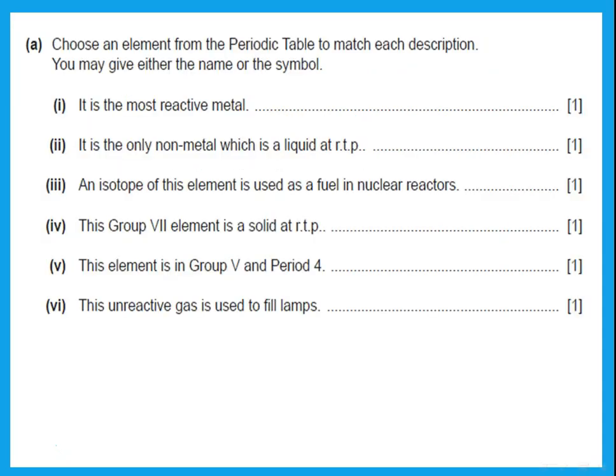Choose an element to match this. It is the most reactive metal, which in the periodic table is the most reactive metal. Remember we said it's cesium. We ignore francium. It is the only non-metal which is a liquid. Non-metal which is a liquid is bromine. Bromine is the only non-metal that's a liquid. All the others are either gases or solids. An isotope of this element is used as fuel in nuclear reactors. Which one do we use as fuel in nuclear reactors? Remember that you said uranium-235 is used to produce energy in nuclear power stations.